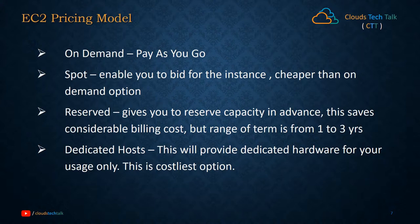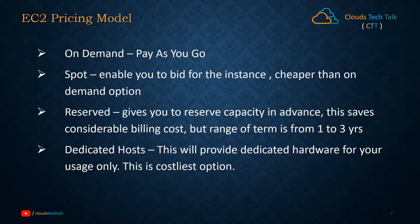The third pricing model is reserved: if you can predict your consumption over one to three years, you can reserve EC2 capacity and sign a contract with AWS for a considerable discount. The fourth is dedicated host: if you need dedicated hardware rather than shared infrastructure, AWS will completely separate out hardware for you, creating your own VPC on top of it, giving you a fully dedicated cloud environment. These are the four EC2 pricing models.